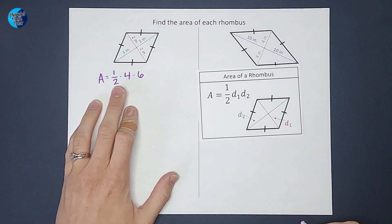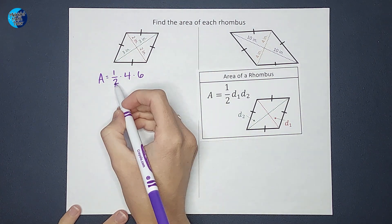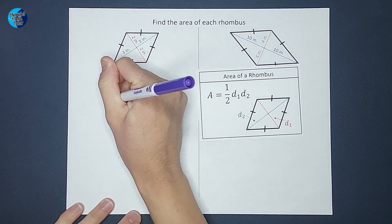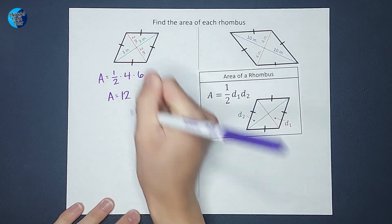Okay, so I've got one half times four times six, which when I do one half times four, that gives me two. Two times six gives me 12. So my area is 12.